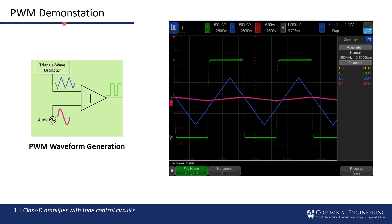The PWM signal is the most important waveform. As predicted, the input audio signal and the triangle wave from the triangle wave generator are visible at the input stage. At the output, the PWM signal — shown in green on the oscilloscope — is clean and clearly generated by the comparator successfully.